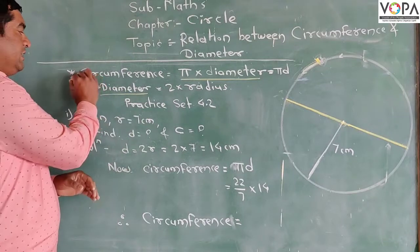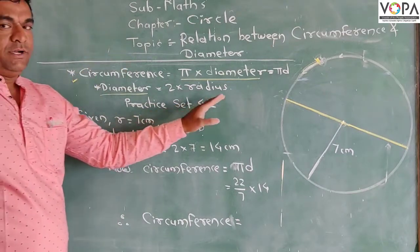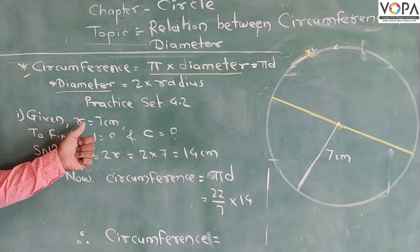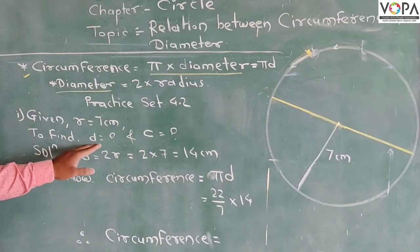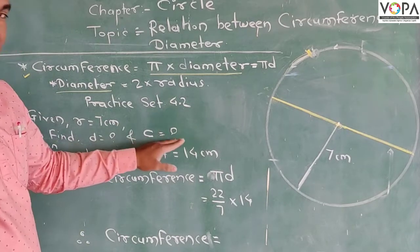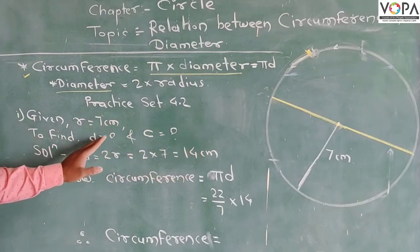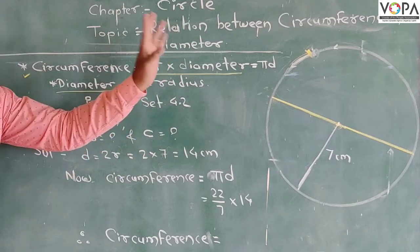Let us take an example on this topic of circumference. Practice Set 4.2. Given: radius is 7 centimeters and we want to find the diameter and circumference. Small c is used for circumference, small d for diameter, and r for radius.